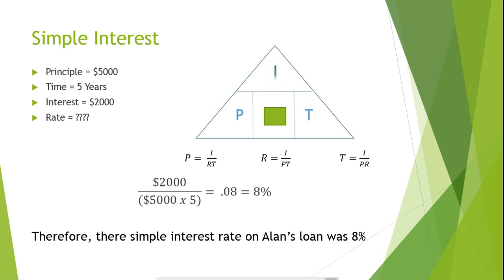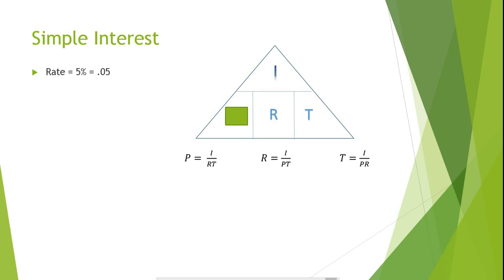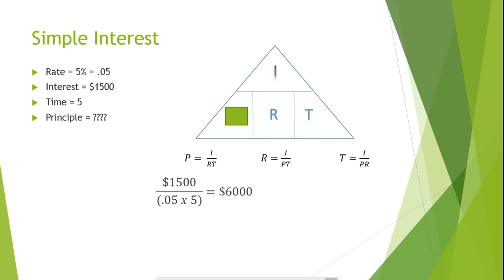Let's try another word problem, but this time we'll solve for the principal. Brenda took out a loan that she paid a 5% simple interest rate on, resulting in her paying a total of $1,500 in interest over the life of the loan, which was for five years. What was the principal of the loan? Since we're solving for the principal, our formula is P equals I divided by RT, or principal equals interest divided by rate times time. So if we plug in our figures, our formula would be $1,500 divided by 0.05 times 5, equaling $6,000. Therefore, Brenda's loan was for $6,000.